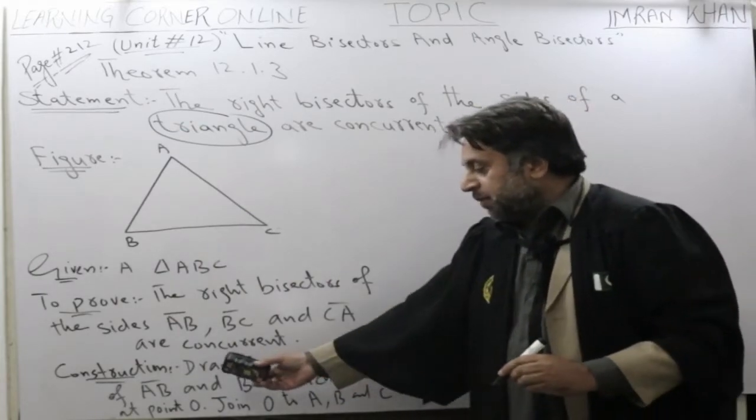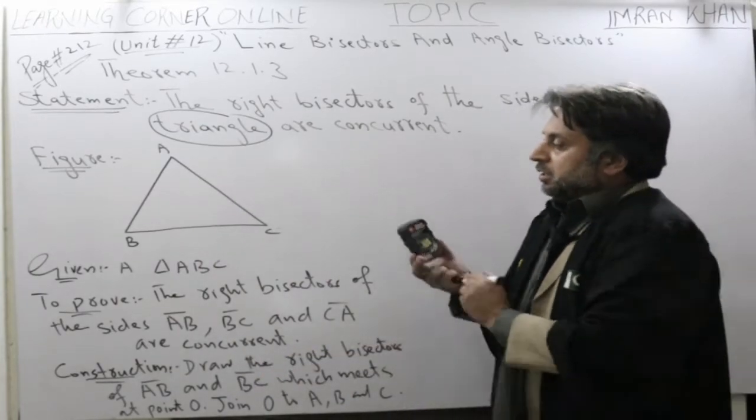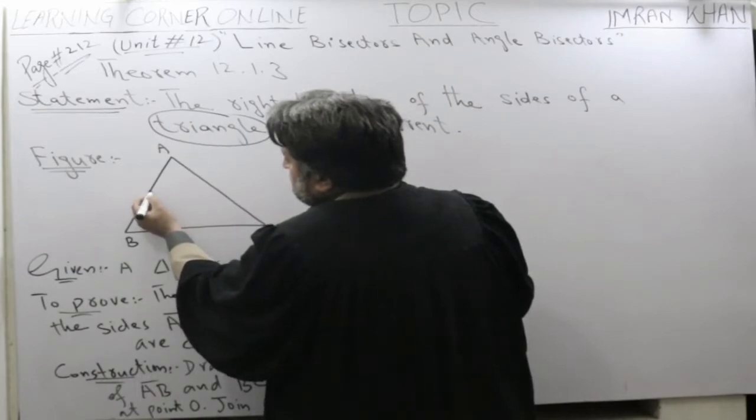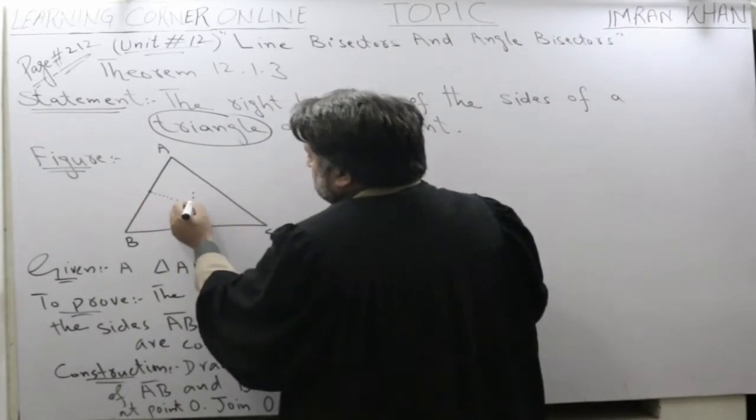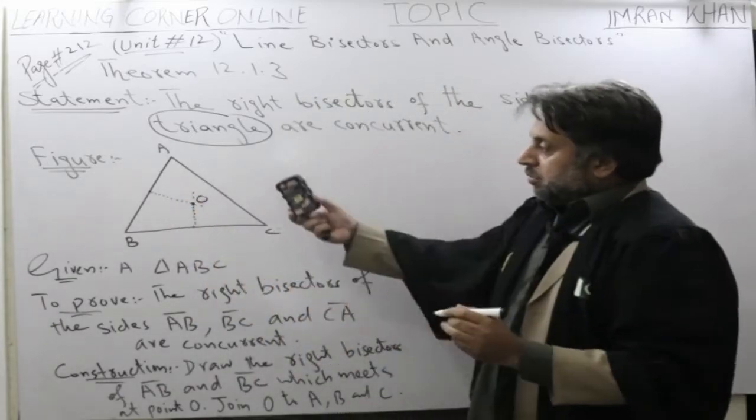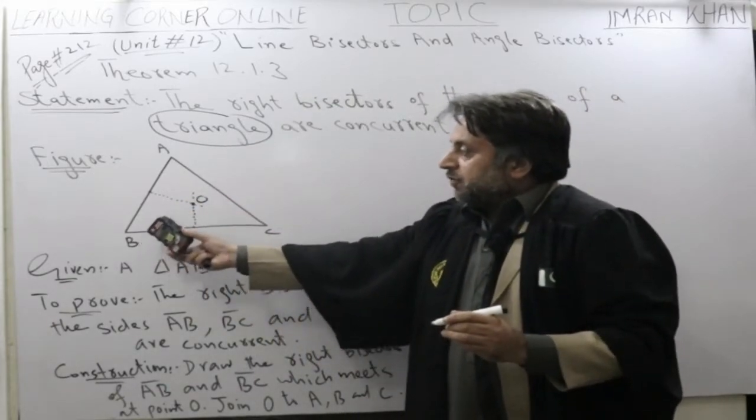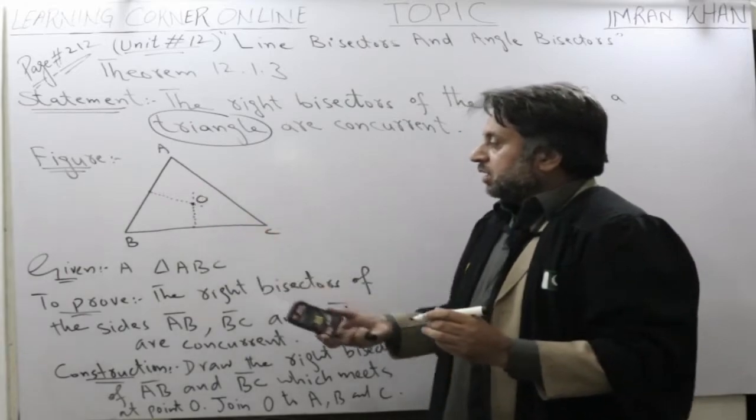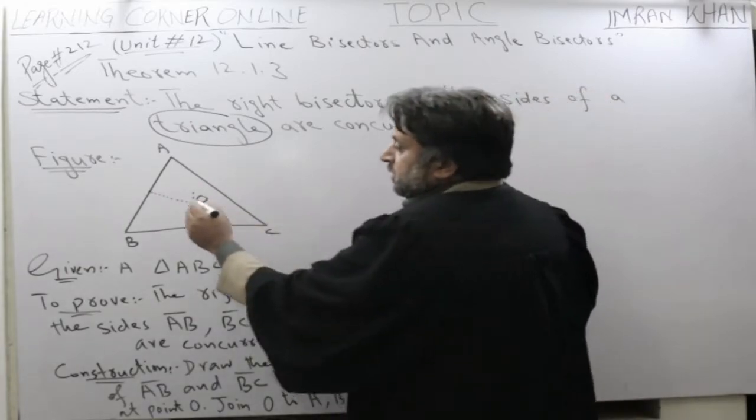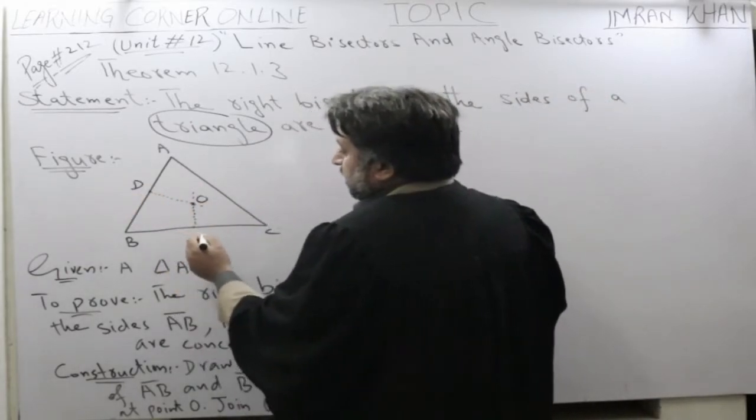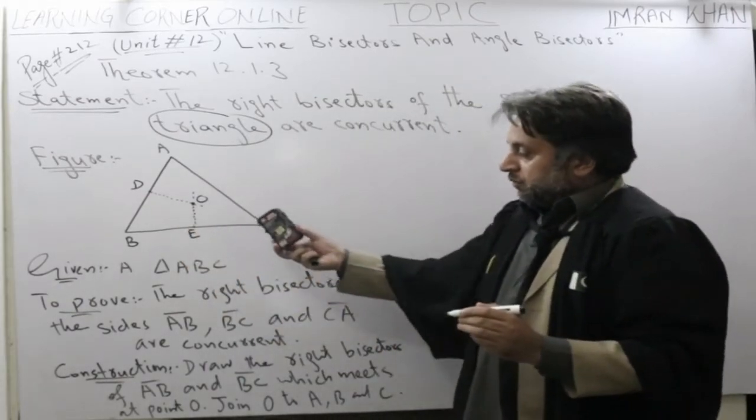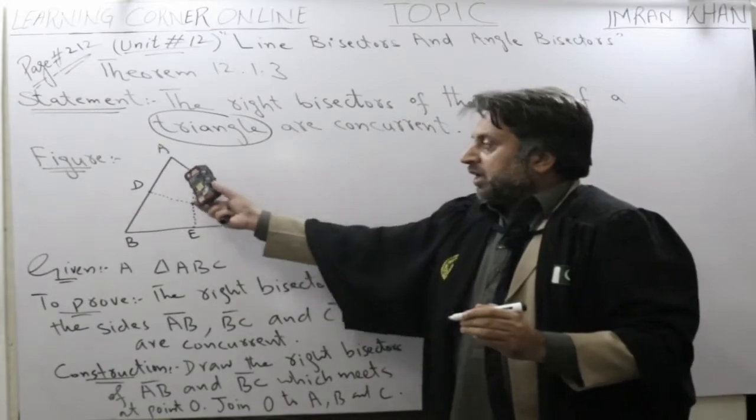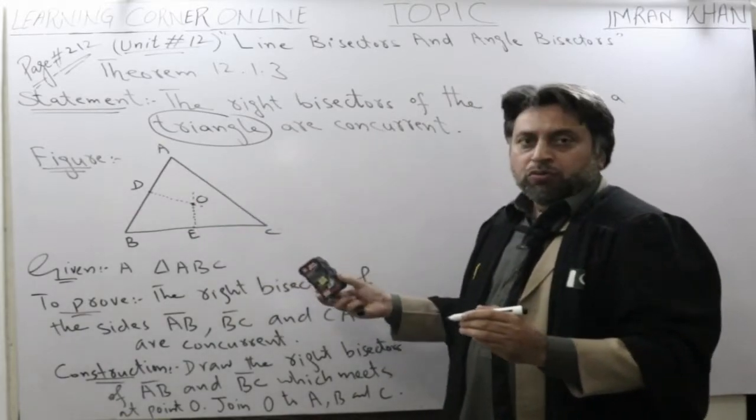In construction, draw the right bisector of AB and BC. Now, the right bisector of AB is this one, which is, let's say, D point, E point. And we will draw. And we will join O to A, O to B and O to C.